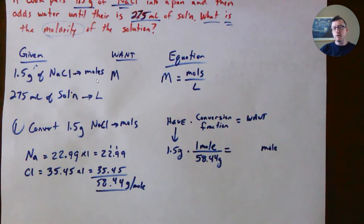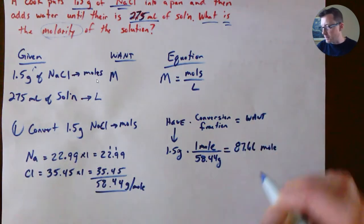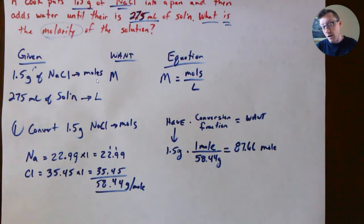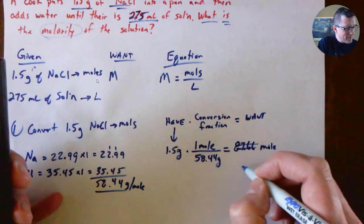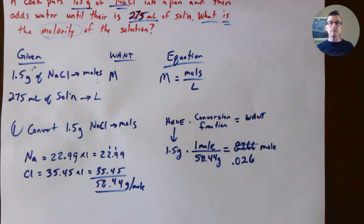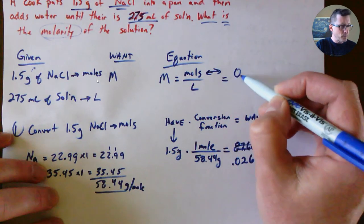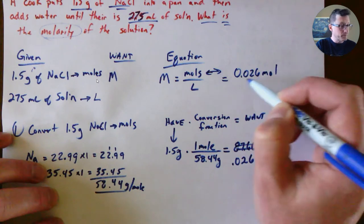Take my calculator. That's a dividing problem now: 1.5 divided by 58.44. I get 87.6—I'm sorry, I multiplied. Always look at your answer to make sure it makes sense. 1.5 divided by 58.44 gives 0.026 moles, doing at least two non-zero decimal places. Is that my answer? No, so I have my numerator: 0.026 moles.